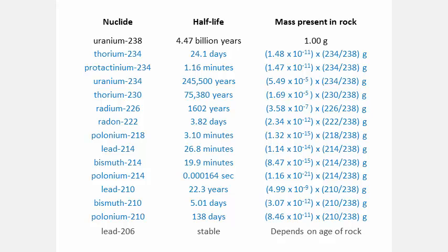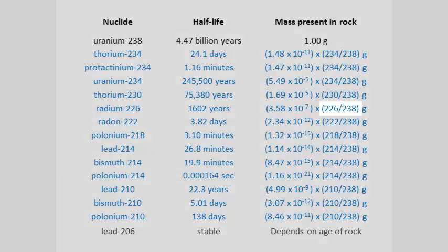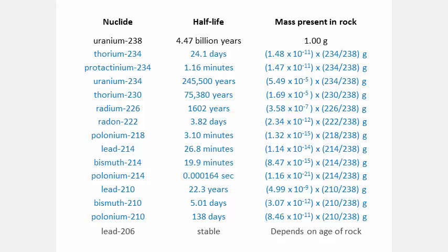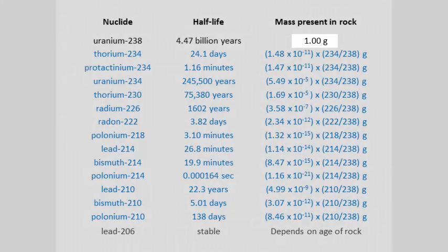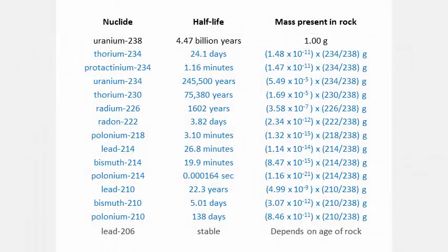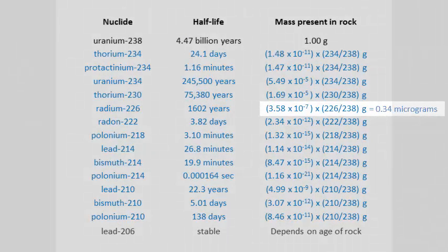We need to multiply this number by an adjustment factor to account for the difference in mass between radium and uranium atoms. This is simply the ratio of their mass numbers. Then we multiply this result by one gram, the mass of the U-238. The answer is 0.34 micrograms or one three millionth of a gram of radium in the rock.